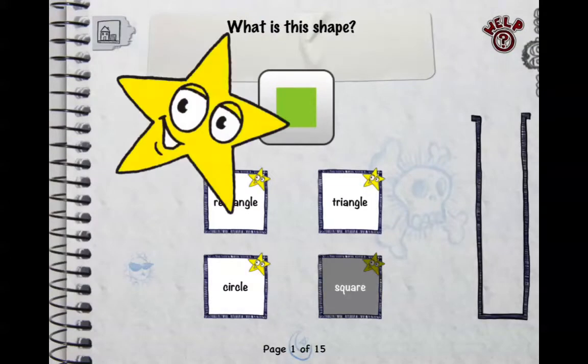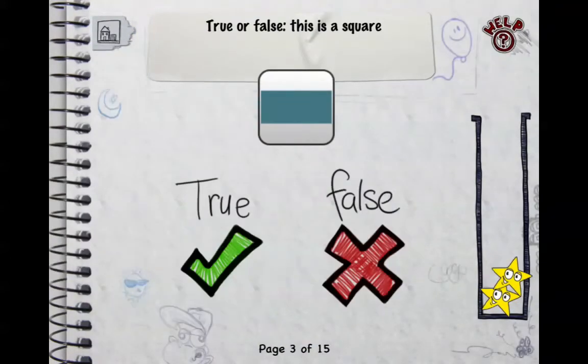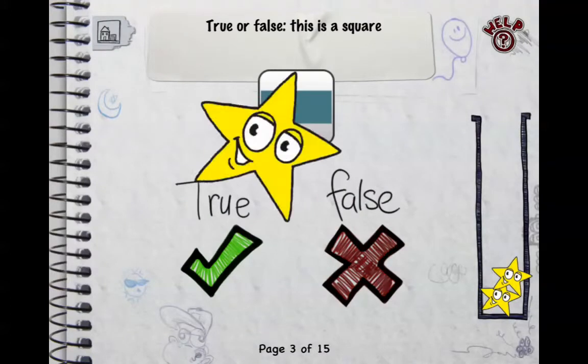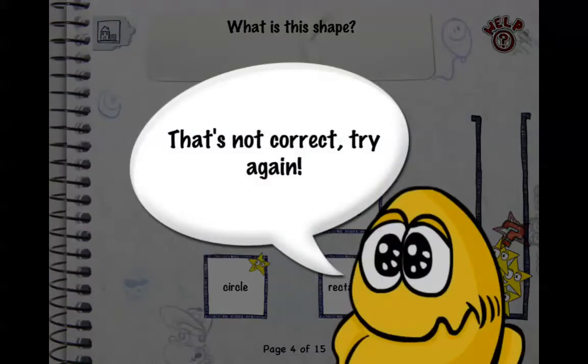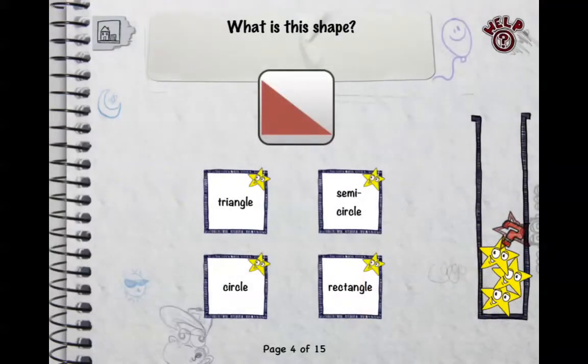Let's go. What is this shape? Square, rectangle, true or false this is a square. If you get it wrong, I'll show you with this one, it tells you that it's wrong.